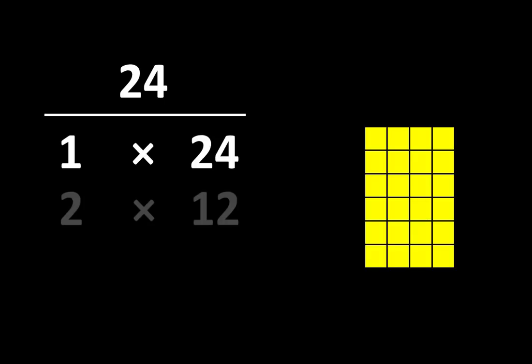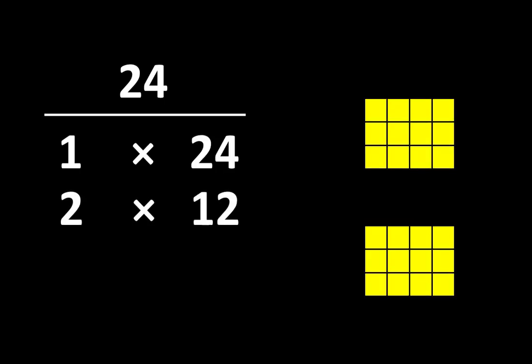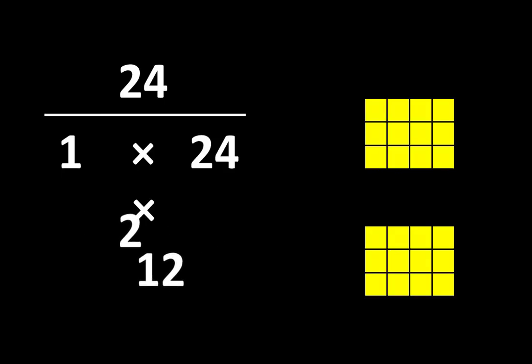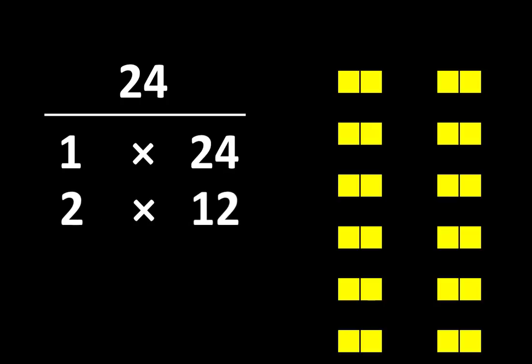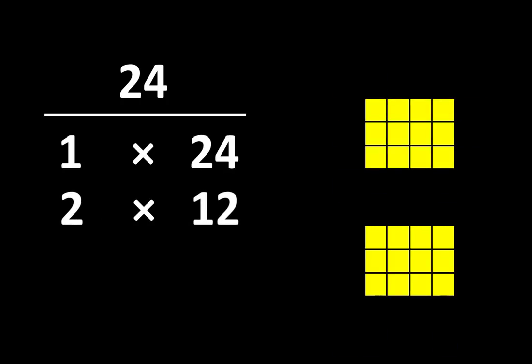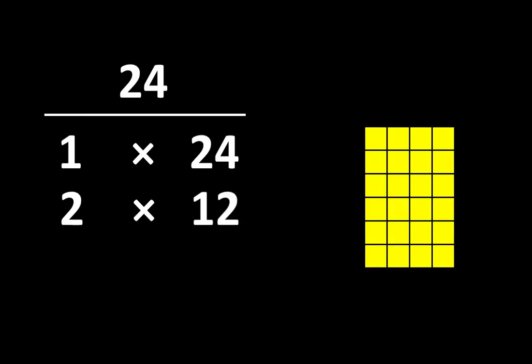We can also break 24 apart into 2 groups of 12. Here is one way to show 2 groups of 12. And we know that if we can make 2 groups of 12, then we can also make 12 groups of 2. So we can think of it both ways — we can move them back to 2 groups of 12, and we know that the total is still 24.